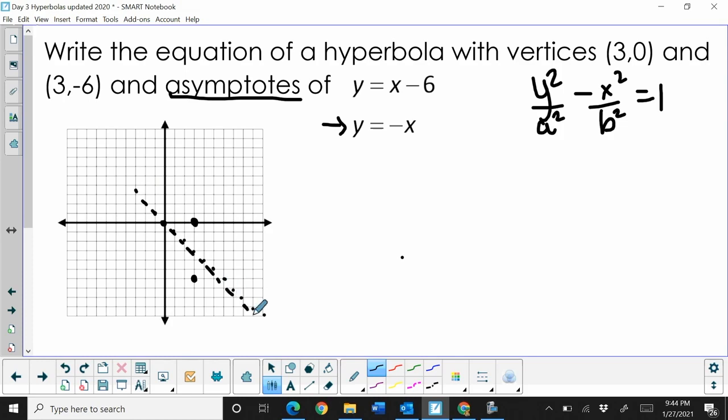So the second one is y = x - 6. We go down to our y-intercept of negative six and then we go up by one. Yes, they're both crossing at that little point. Now let's figure out what that center point is - one, two, three down, so it is at (3, -3).